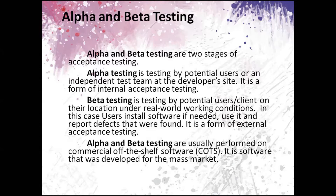Beta testing is a form of external acceptance testing. It is done after alpha testing and it is tested by potential users or existing users on their location under real-world working conditions. In this case, users can install software if needed, use it, and report defects that were found.